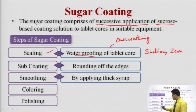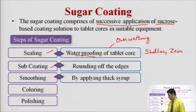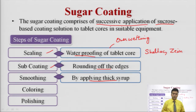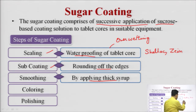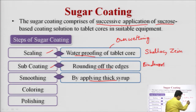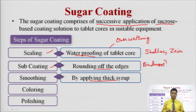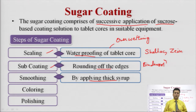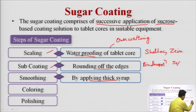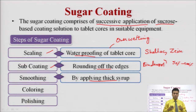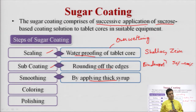Next step is subcoating, which means rounding off the edges. Humein edges ko round off karna chahte hai. In the process of subcoating, we apply a thick binder solution in which we can use acacia or gelatin. After that we apply a subcoating powder jisme talc, calcium carbonate, or kaolin use kar sakte hai. In this subcoating step, around 50 to 100 percent weight of the tablet increases, size increases, edges are rounded off, and the tablet attains its maximum desired size.